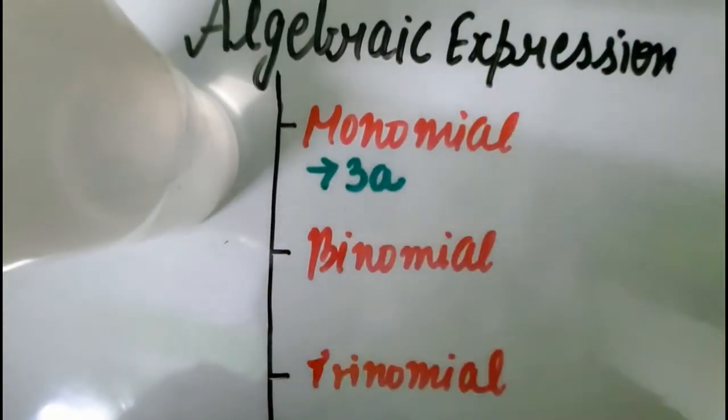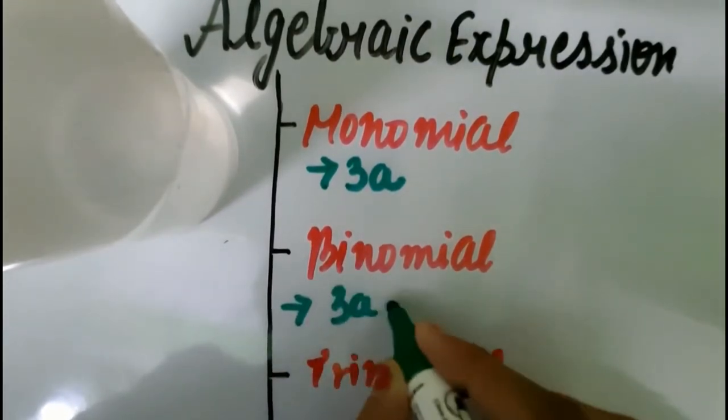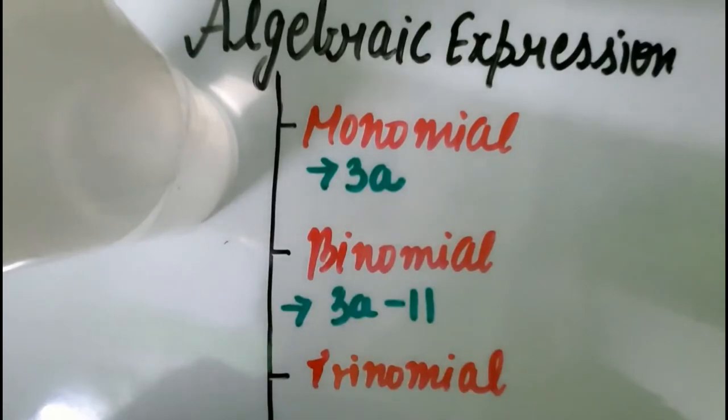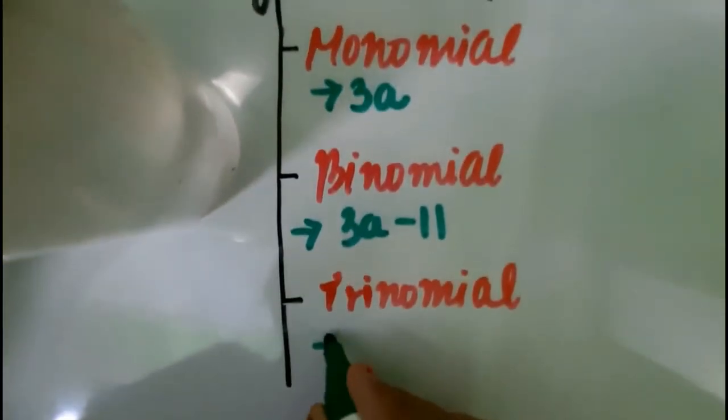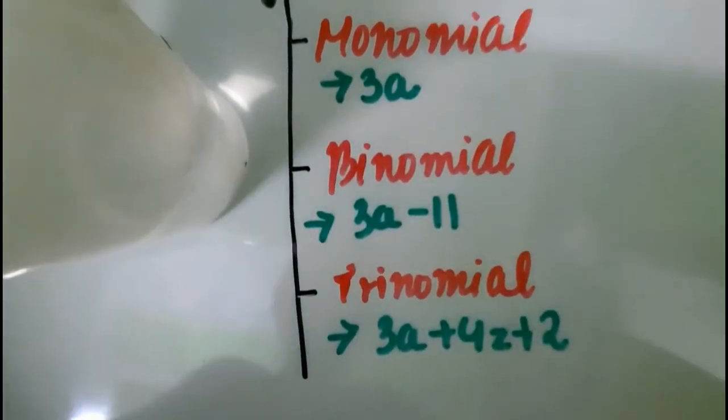And binomial, which has two terms, like 3a minus 11, 7a plus 4. Trinomial, same, which has three terms like a plus 4z plus 2, or a minus b plus c.